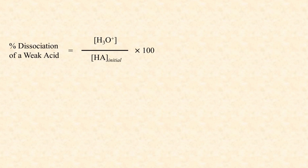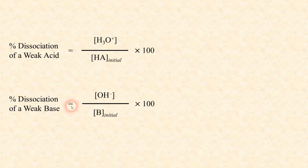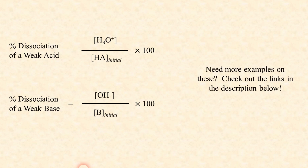Another equation you're expected to know is how to calculate the percent dissociation of a weak acid or a weak base. After you've completed the ICE box and calculated the hydronium concentration at equilibrium, the percent dissociation of a weak acid equals the hydronium ion concentration at equilibrium divided by the initial acid concentration, multiplied by 100. For a weak base, it's the hydroxide ion concentration at equilibrium divided by the initial base concentration multiplied by 100. Be aware that you're expected to know how to do this without the equation being given to you.